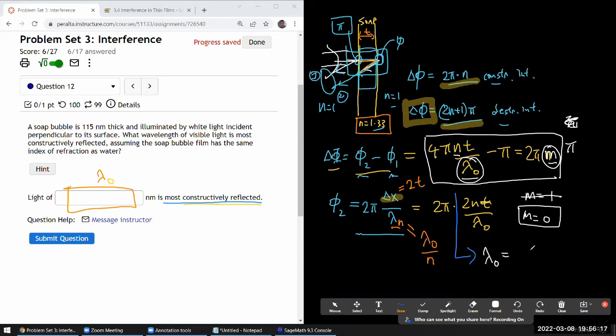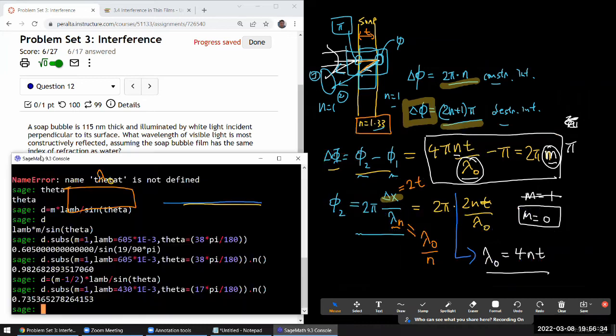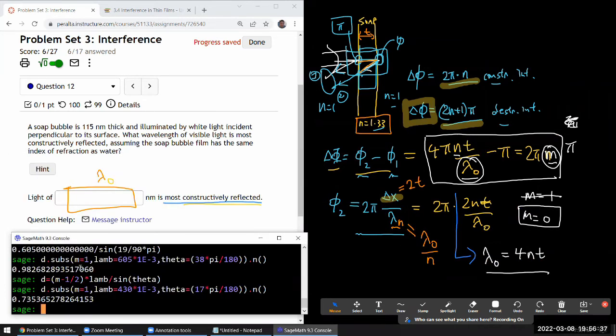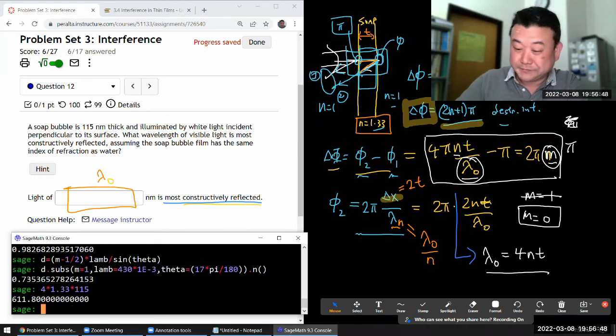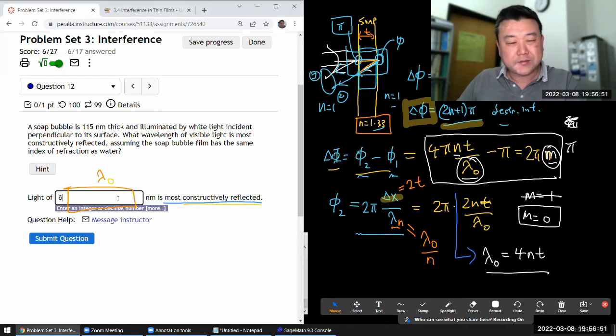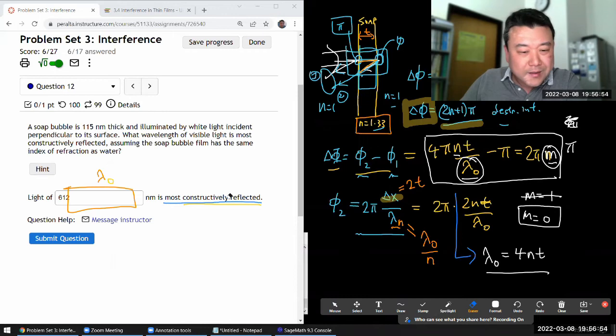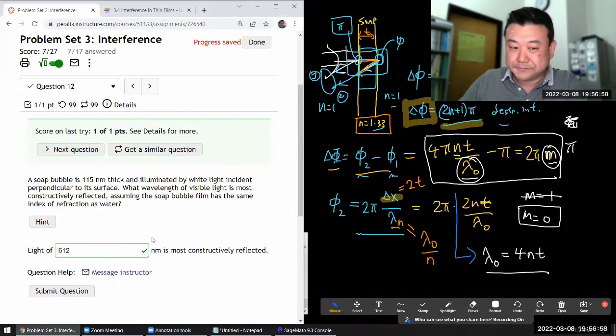Let me just plug in the numbers. And I think here it's kind of simplest to just type in the numbers. Because it's all multiplication. 4 times n, 1.33, times the thickness, 115 in nanometers. And I'll get an answer in nanometers. It's 611.8, so 612. I mean, you don't have to round, but let's round. And we'll see. Yeah, that's it.